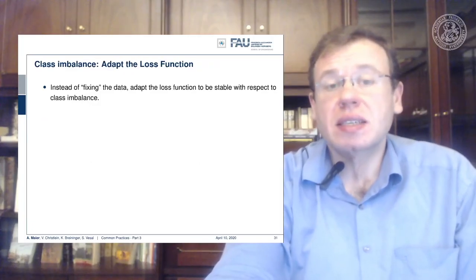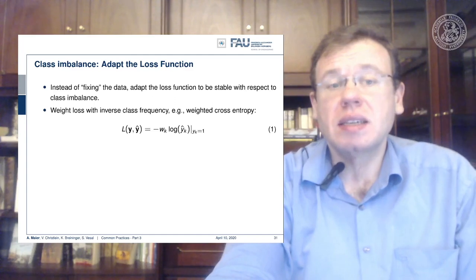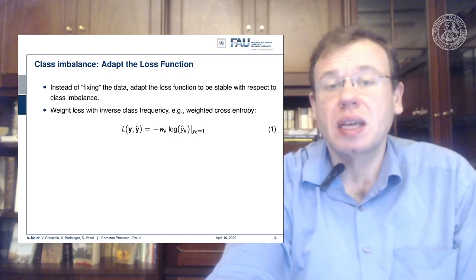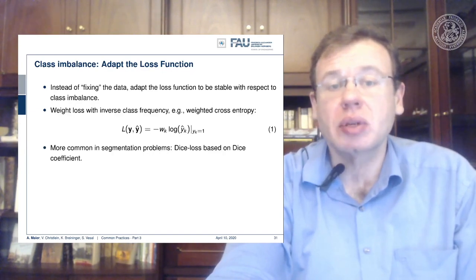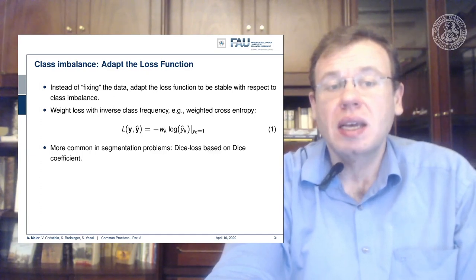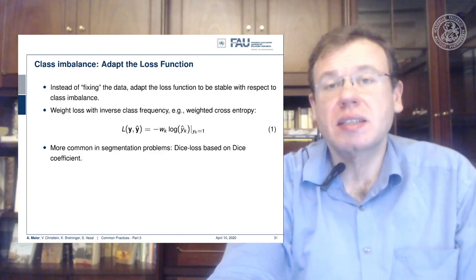Instead of fixing the data, you can also adapt the loss function to be robust with respect to class imbalance, by choosing a loss with the inverse class frequency. For example, you can use weighted cross-entropy, introducing an additional weight w_k determined as the inverse class frequency. More common in segmentation problems are dice-based losses, based on the dice coefficient, which is a very typical measure for evaluating segmentations.